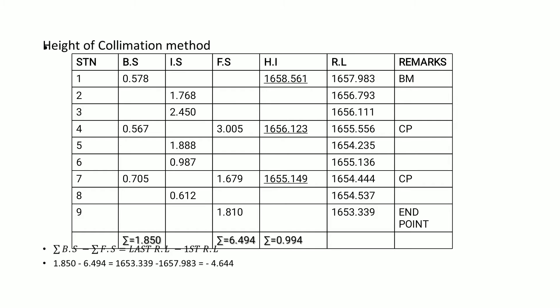The other method of reducing levels is the height of collimation method. This method uses the line of collimation from the instrument to the known point, or to where we made the backsight. The first thing we do is, given that we know the reduced level of the benchmark, we add the reduced level of the benchmark — in this case 1657.983 — to the backsight reading of 0.578.